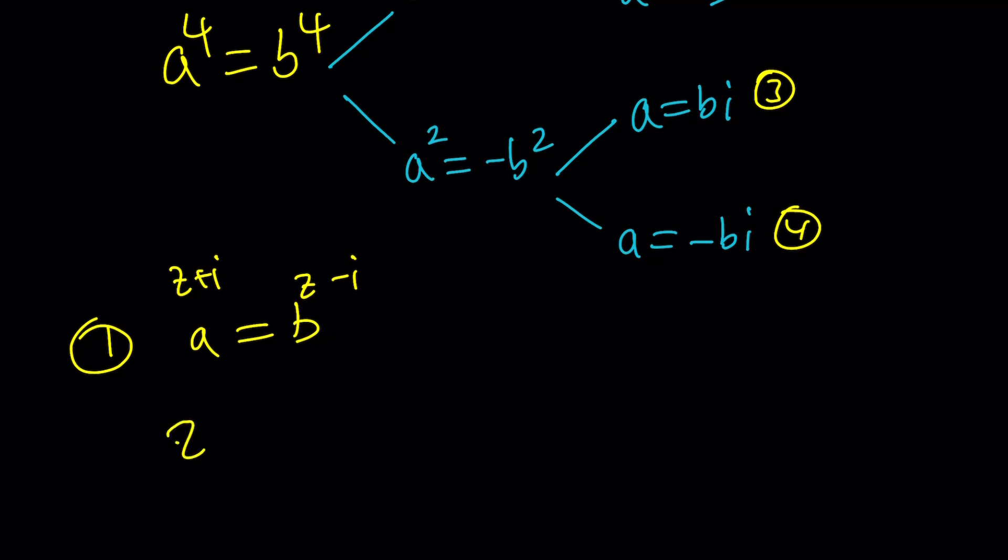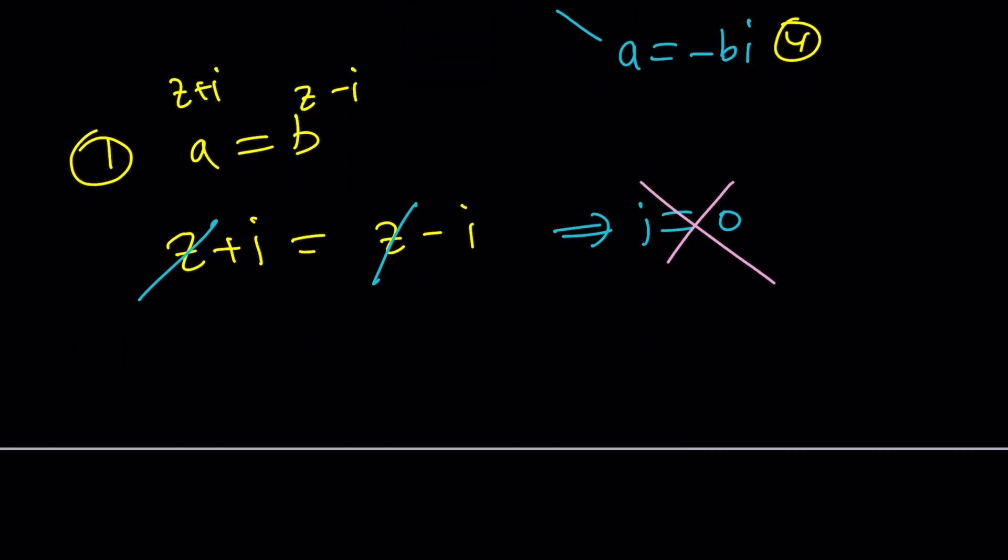A equals B means Z plus I equals Z minus I. And this is a breakthrough. We cancel out Z and we get I equals zero because two I is zero. Come on, is that possible at all? I don't think so. Well, that was a joke. No solutions from here.